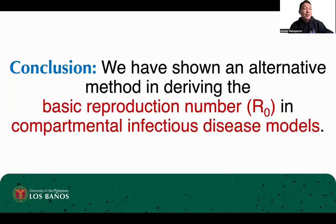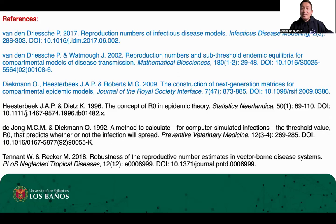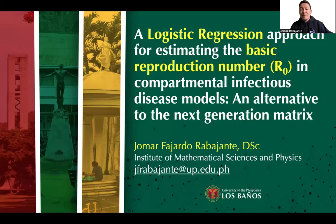In conclusion, we have shown an alternative method in deriving the basic reproduction number or R0 in compartmental infectious disease models. Our method as a template can also be used for other types of models, for example in agent-based simulations to derive the basic reproduction number. We are now preparing our paper to show the advantages and limitations of this method, especially in dealing with more complex models with many parameters. To know more about existing methods for deriving R0, here are some references — the first three are good references with regards to the next-generation matrix. This is Jomar Fajardo Rabahante, and thank you very much for listening.